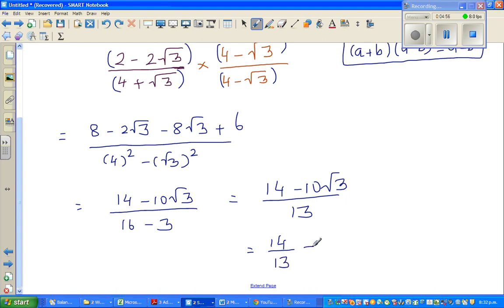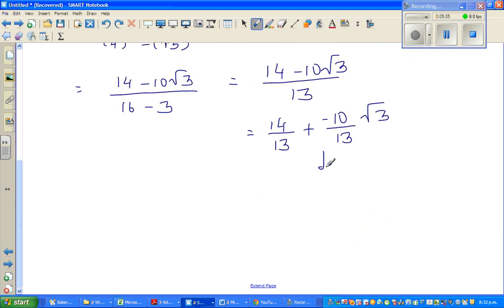I want to put a plus, and then I'll write minus 10 over 13 root 3. So why did I write this? Because I want to write this as a plus b root 3. That's what they wanted.